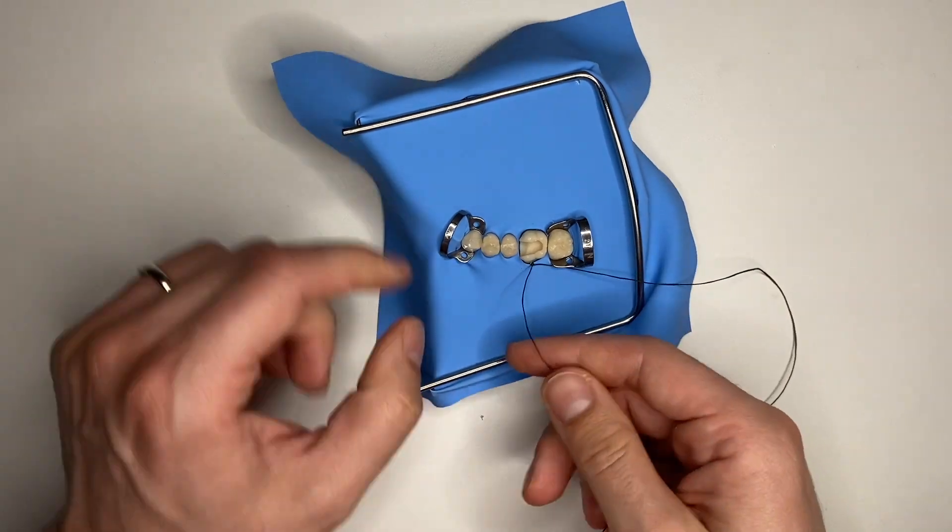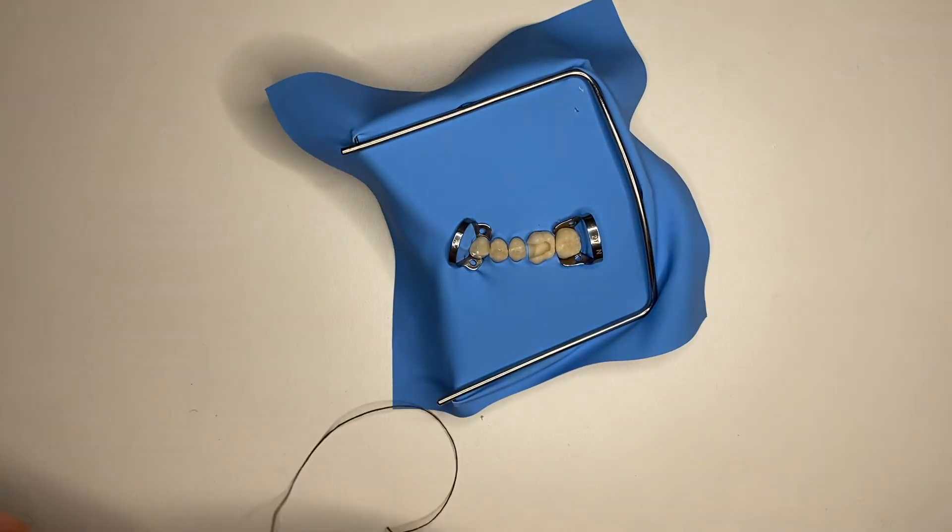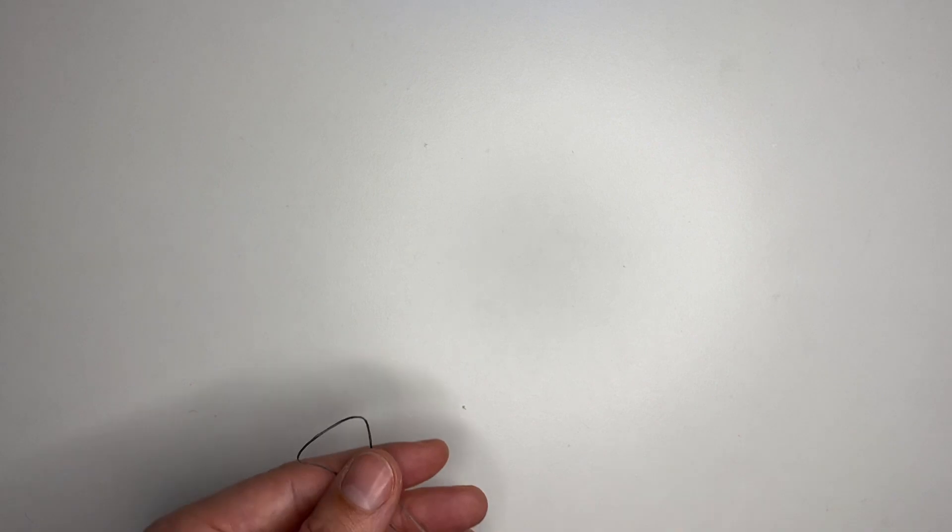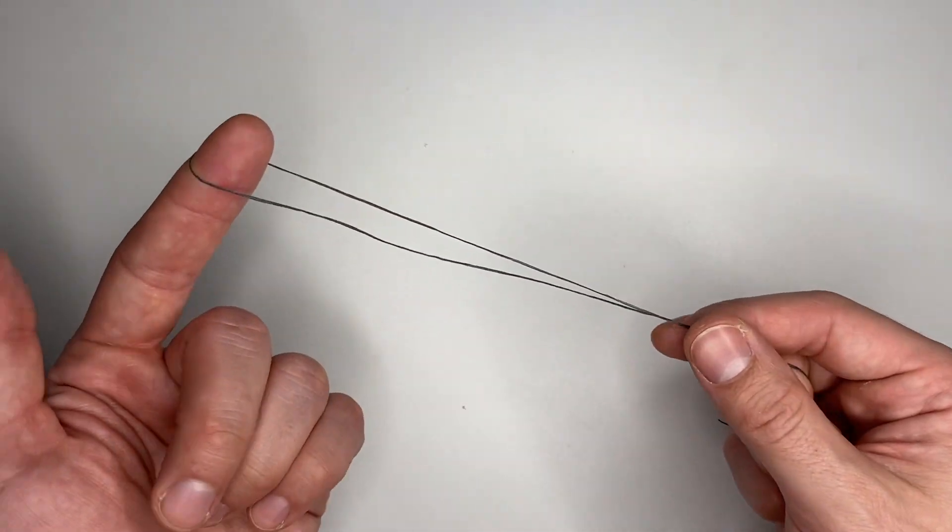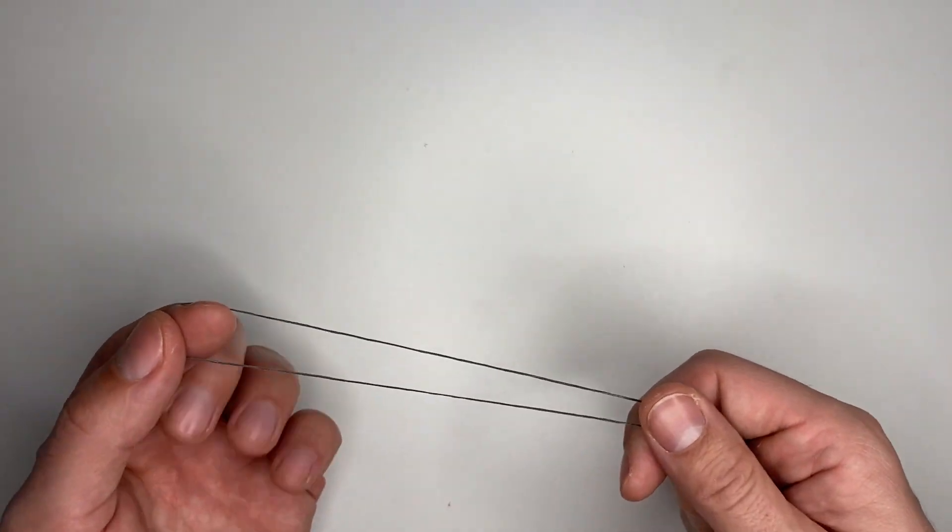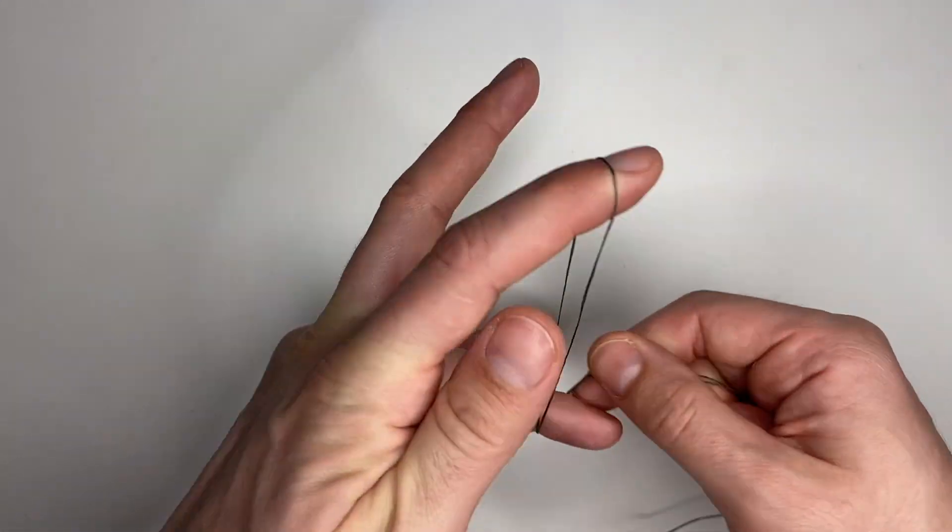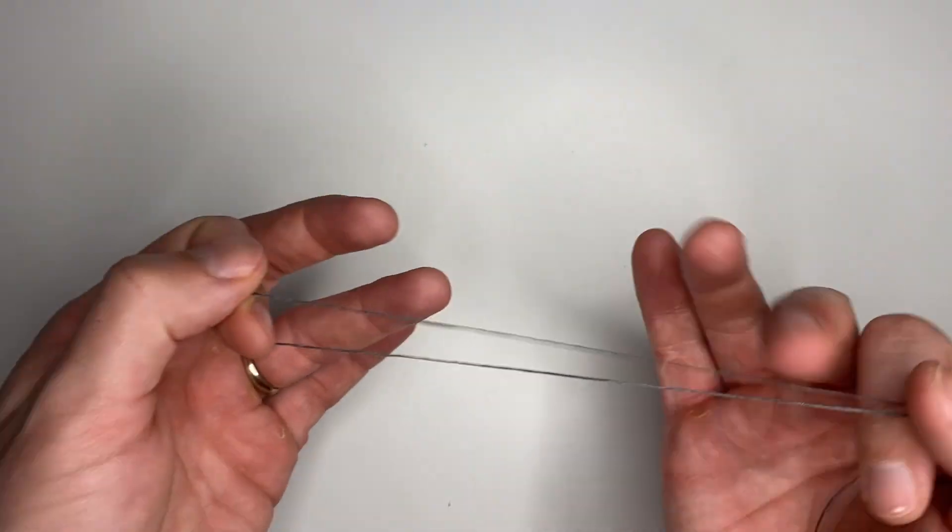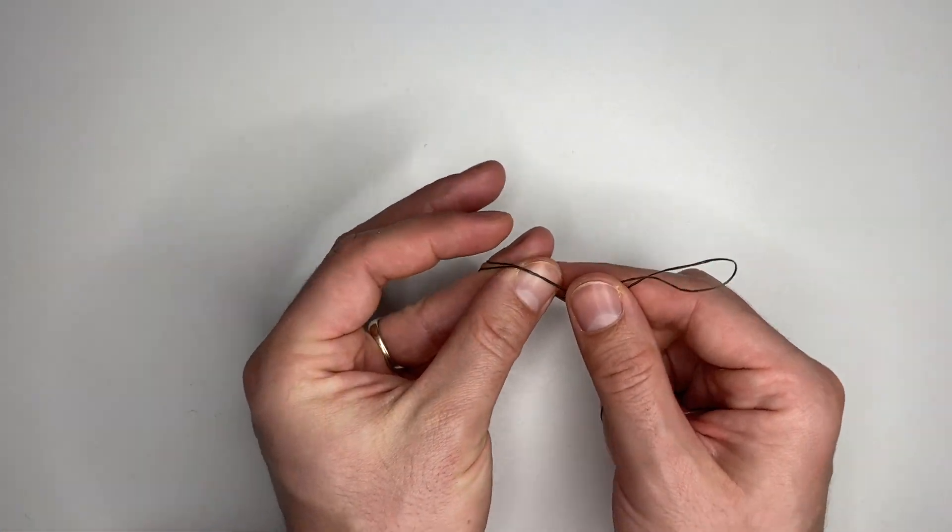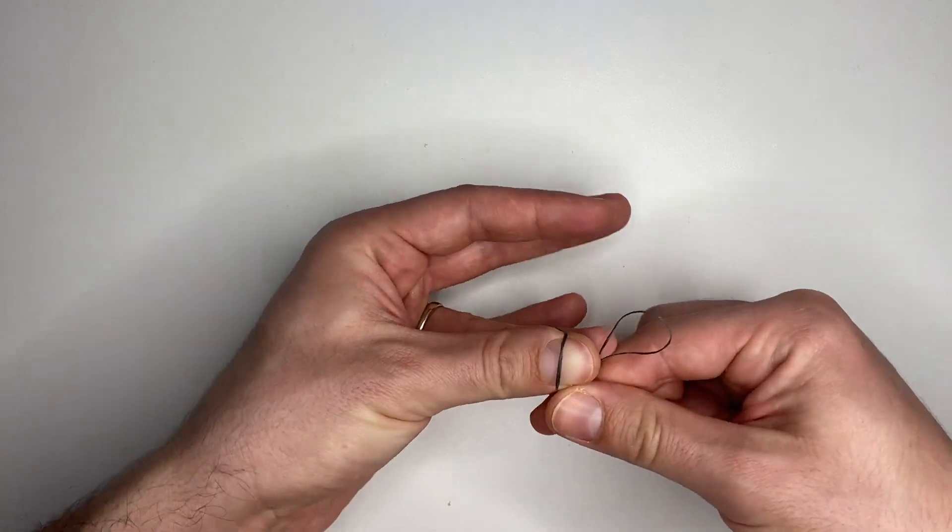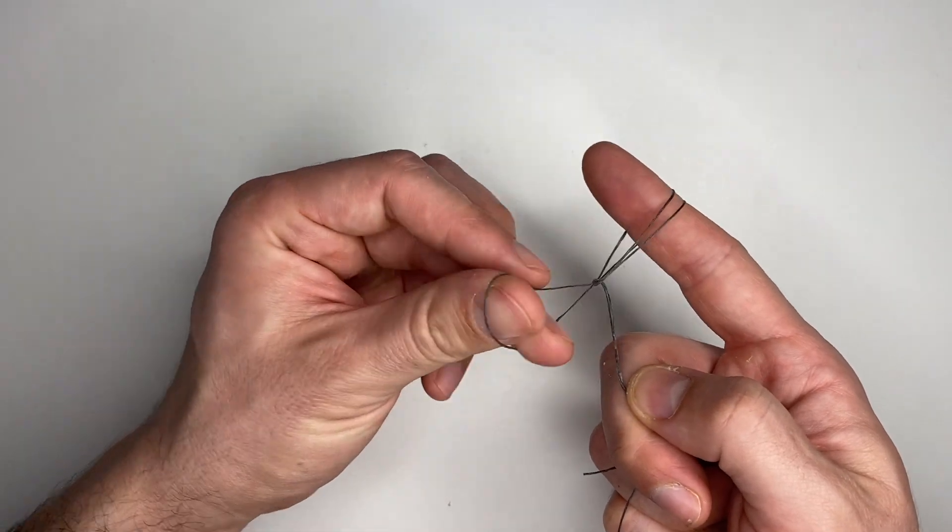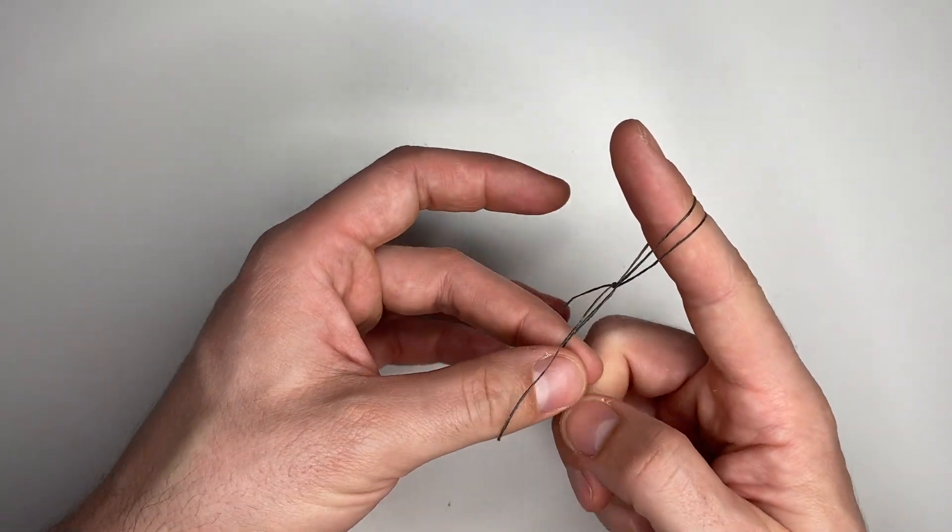However, sometimes this won't work, so you need a different kind of ligature: the self-tightening one. Just like the first time, we're going to fold our floss in two and make a nice bow in the middle. Then we're going to put the end through, but we're not going to let it go. We're going to put the other end of the ligature through right here.